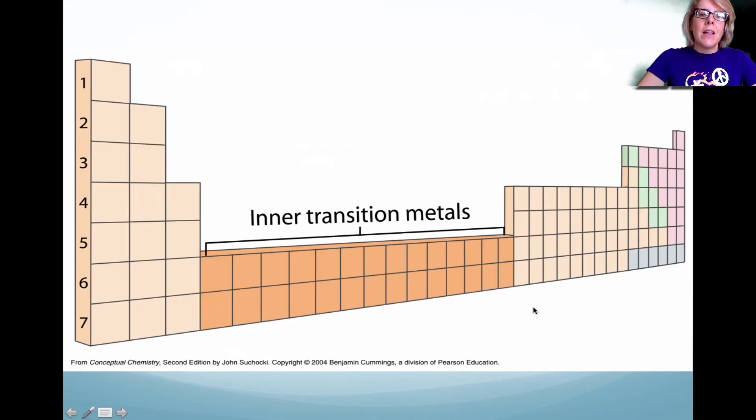Okay. So with this slide, this is where technically the inner transition metals should go. But because we don't want this huge wall hanging, the chemists decide to squash everything and just move these two rows of elements to the very bottom.